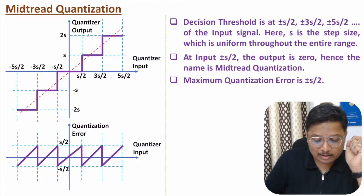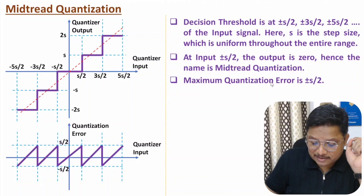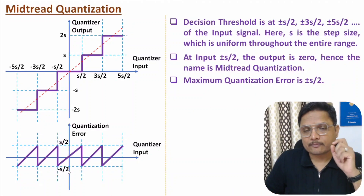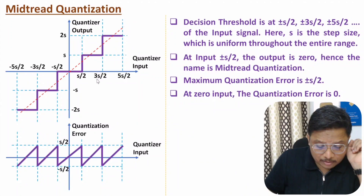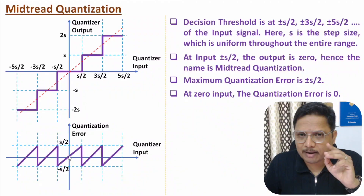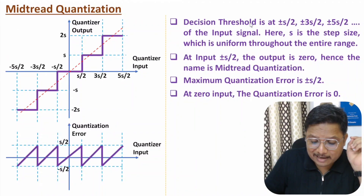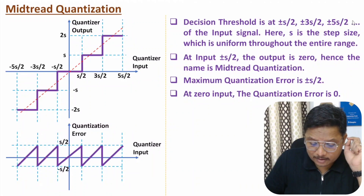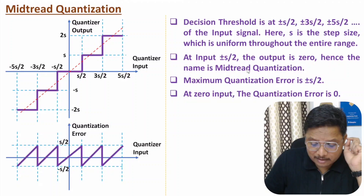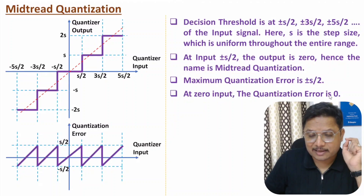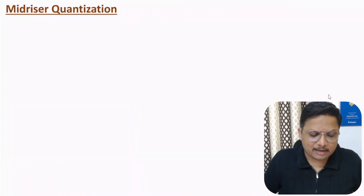Note that maximum quantization error is plus or minus s/2. In mid-tread quantization, at zero input the quantization error is also zero. To summarize the key points of mid-tread: decision thresholds are at plus or minus s/2, plus or minus 3s/2, plus or minus 5s/2, and so on; at input plus or minus s/2 our output is zero — that's why the name is mid-tread; maximum quantization error is plus or minus s/2; and at zero input, quantization error is zero.